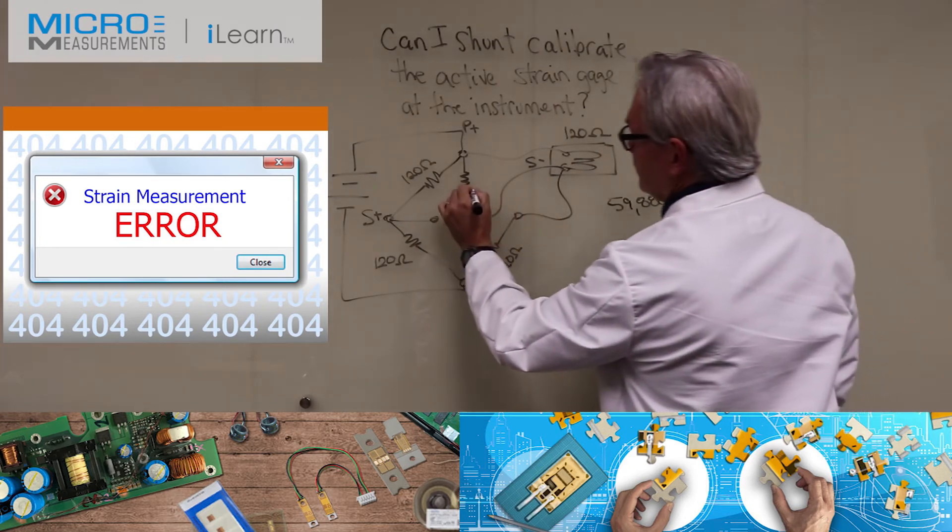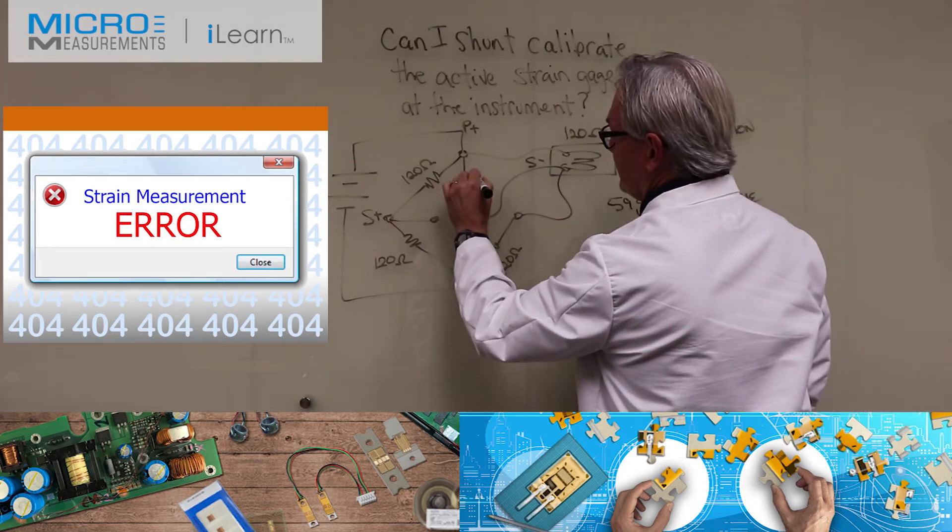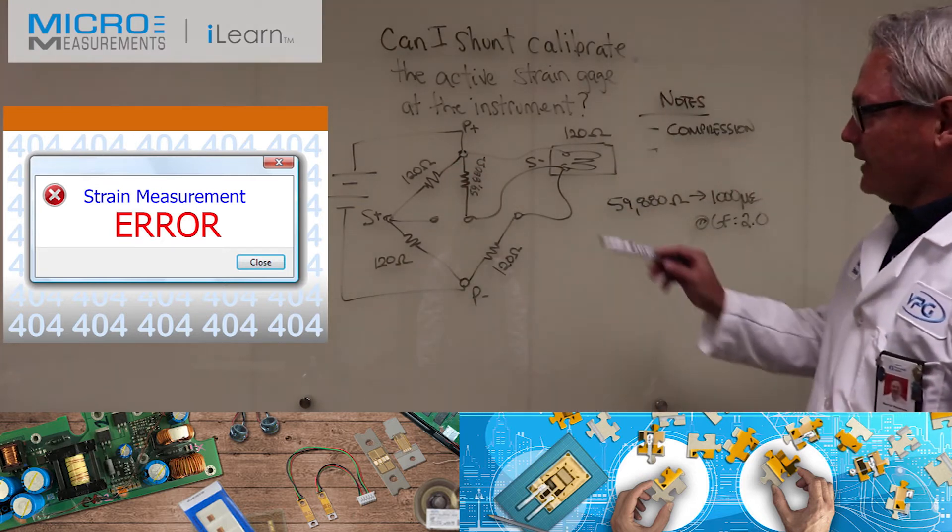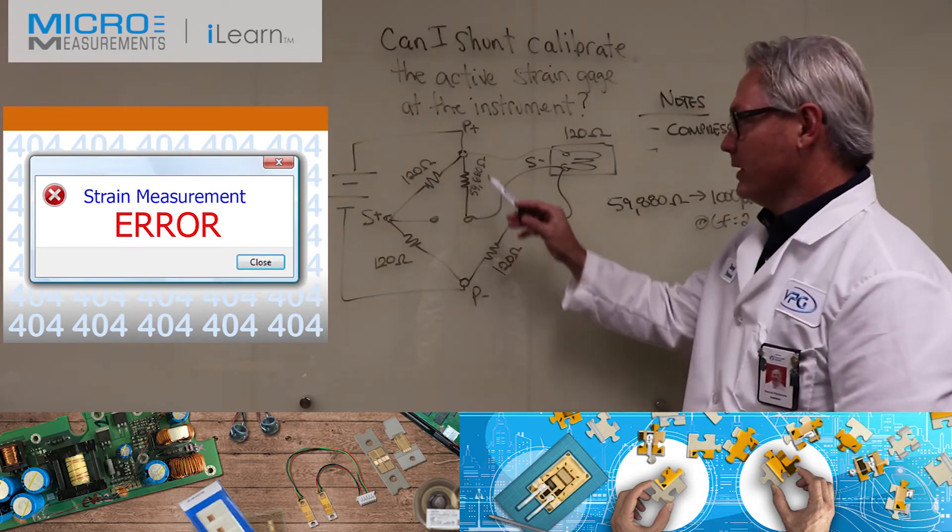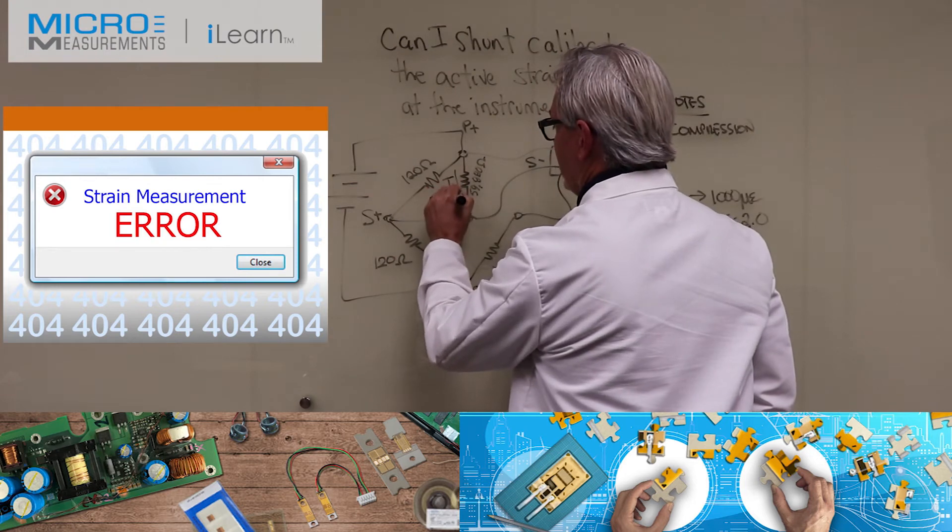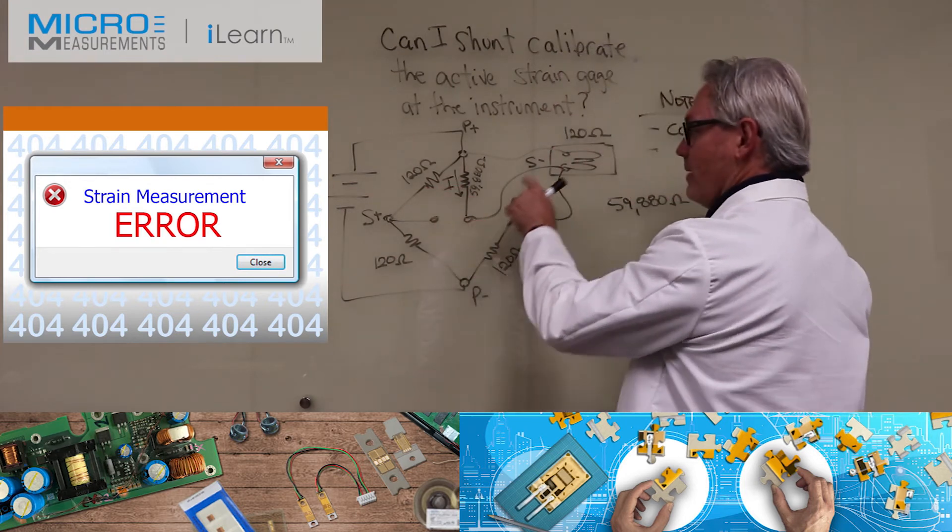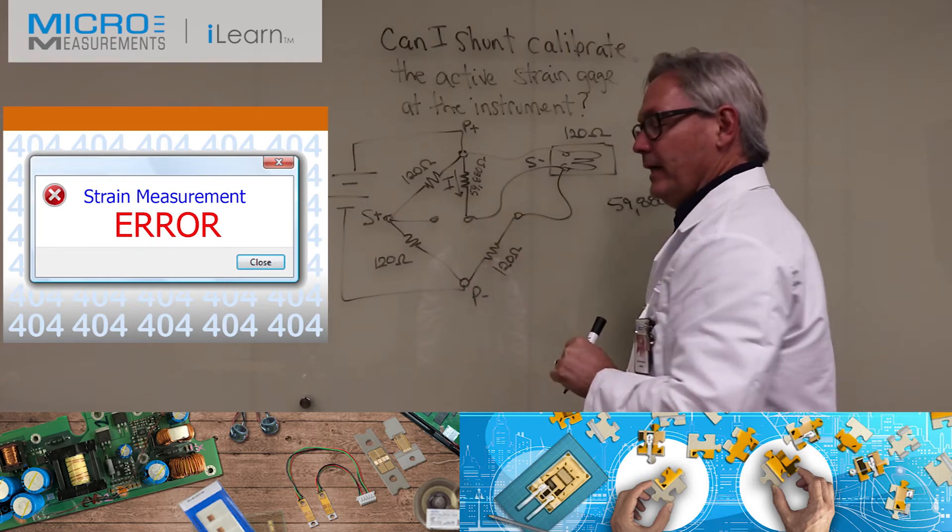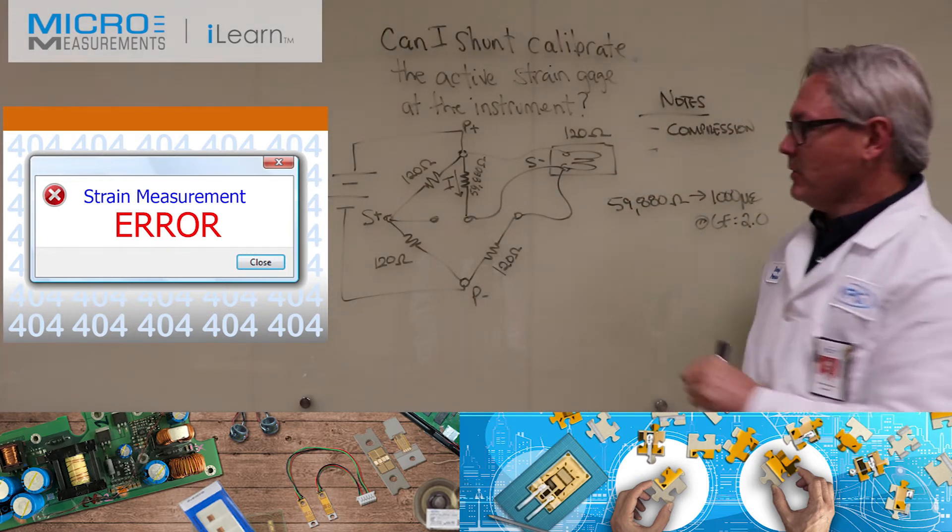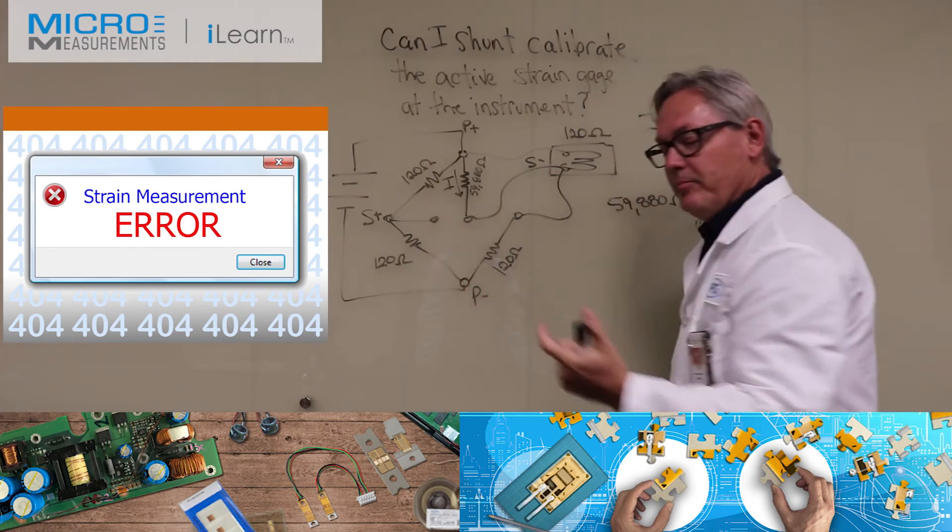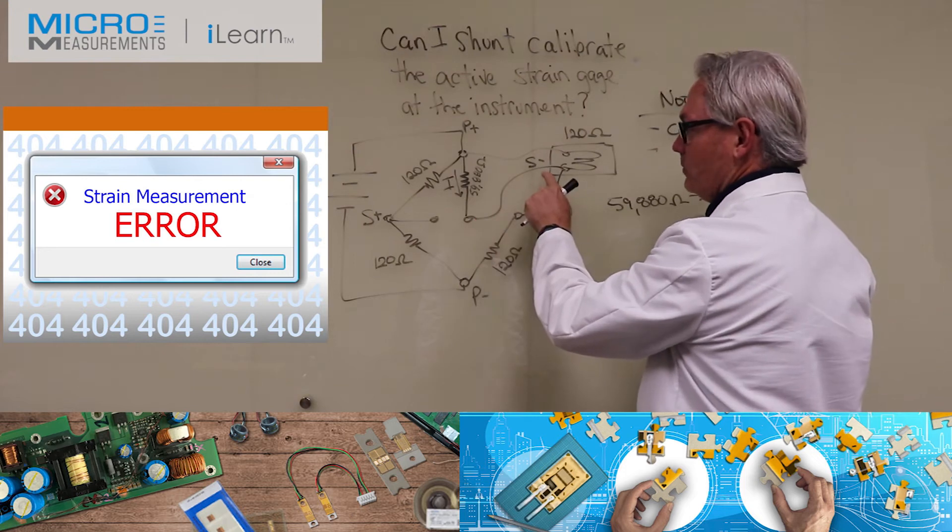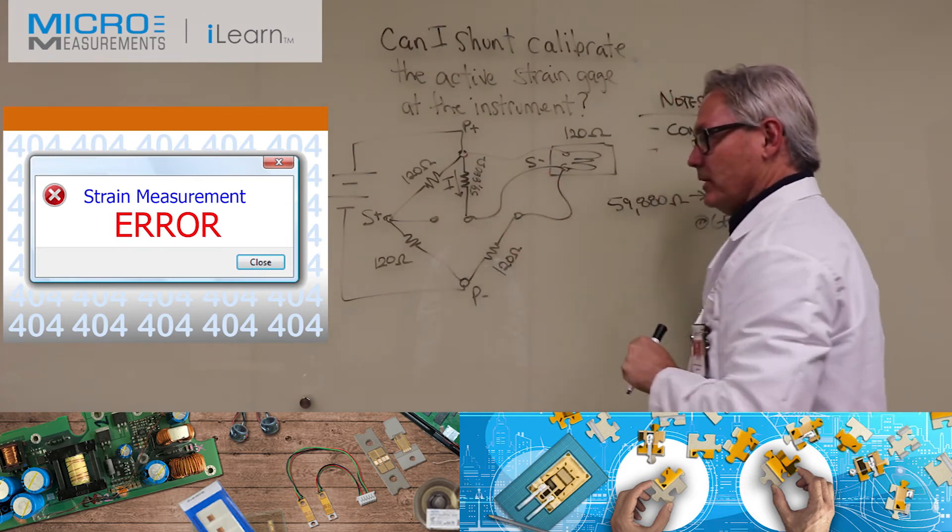Commonly we like to use 59,880 ohms because that will produce a thousand microstrain simulation at a gauge factor equal to 2.0, assuming you've got a 120 ohm strain gauge. So if I connected at this spot, one of the things you've got to realize is that you start drawing a current through that resistor and you drop it onto this signal wire.